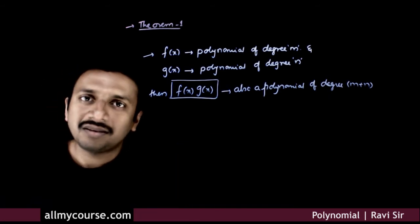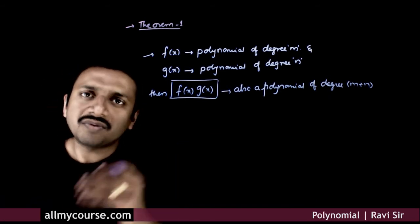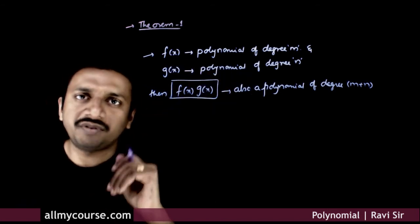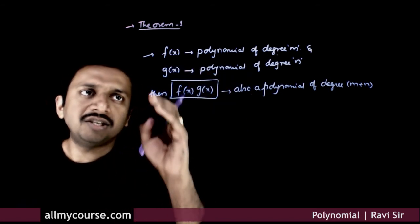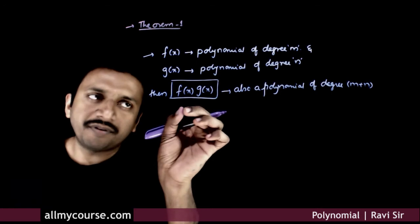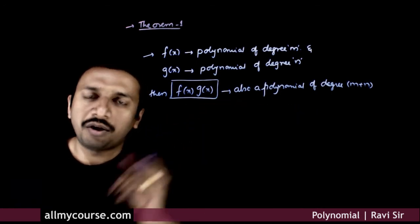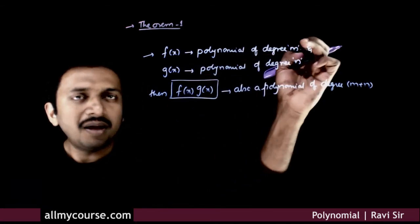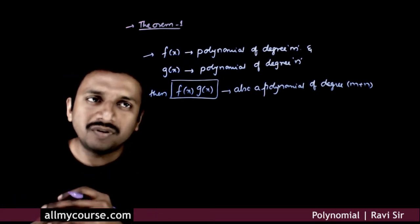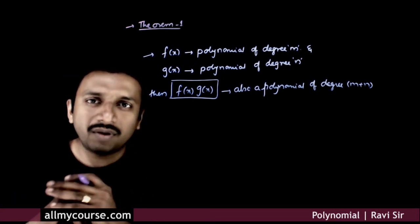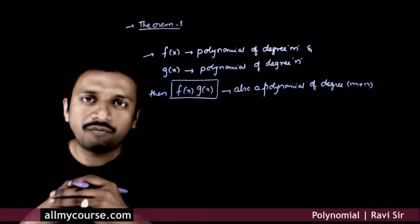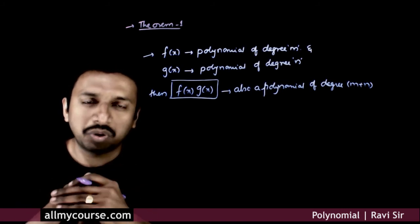So this is the first theorem, which is very simple to understand. If f(x) is a polynomial of degree m and g(x) is a polynomial of degree n, then f(x) times g(x) is a polynomial of degree m plus n. We are not going to prove this, as it looks like a very obvious theorem. I will just give you an example.